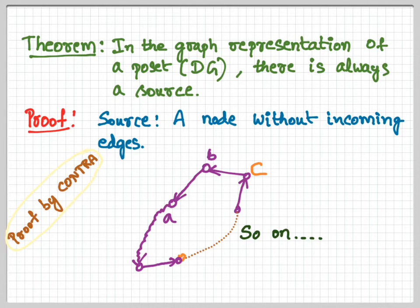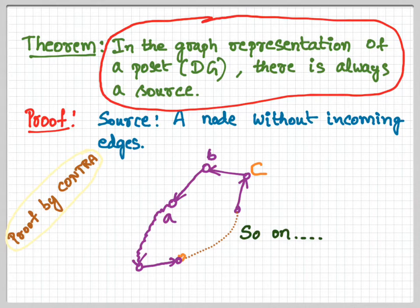A partially ordered set cannot have a cycle. But we are assuming that a partially ordered set doesn't have a source, and we're ending up with the fact that it has a cycle, which means it contradicts the very fact that a partially ordered set doesn't have a cycle, which means it is contradicting the assumption that we made in the beginning is not right. The assumption was there are no source vertices in this graph. That is not right, which means there is always at least one source vertex in a given partially ordered set. So that's the contradiction.